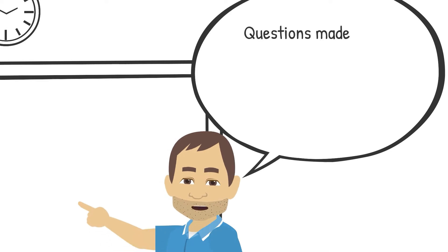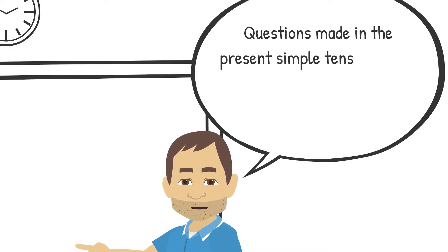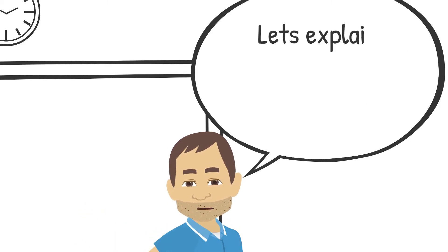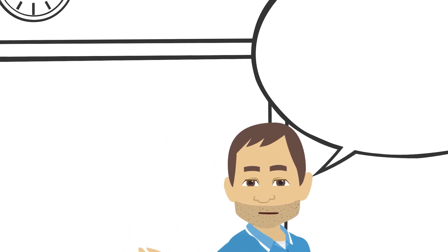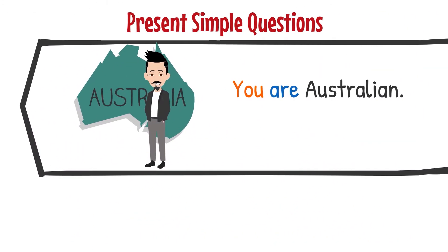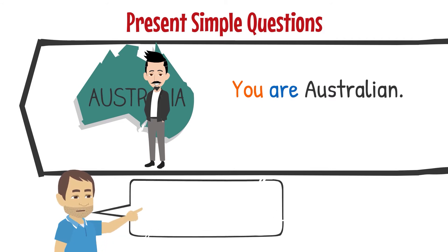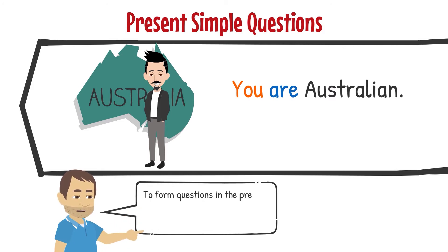Questions made in the present simple tense with to be are formed by switching the verb and the subject. To form questions in the present simple using to be, reverse the order of the subject and the verb.